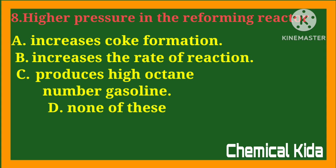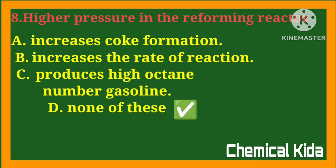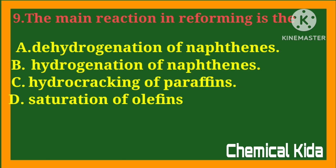Higher pressure in the reforming reactor: a) increases coke formation, b) increases the rate of reaction, c) produces high octane number gasoline, d) none of these. The main reaction in reforming is: a) dehydrogenation of naphthenes, b) hydrogenation of naphthenes, c) hydrocracking of paraffins, d) saturation of olefins.